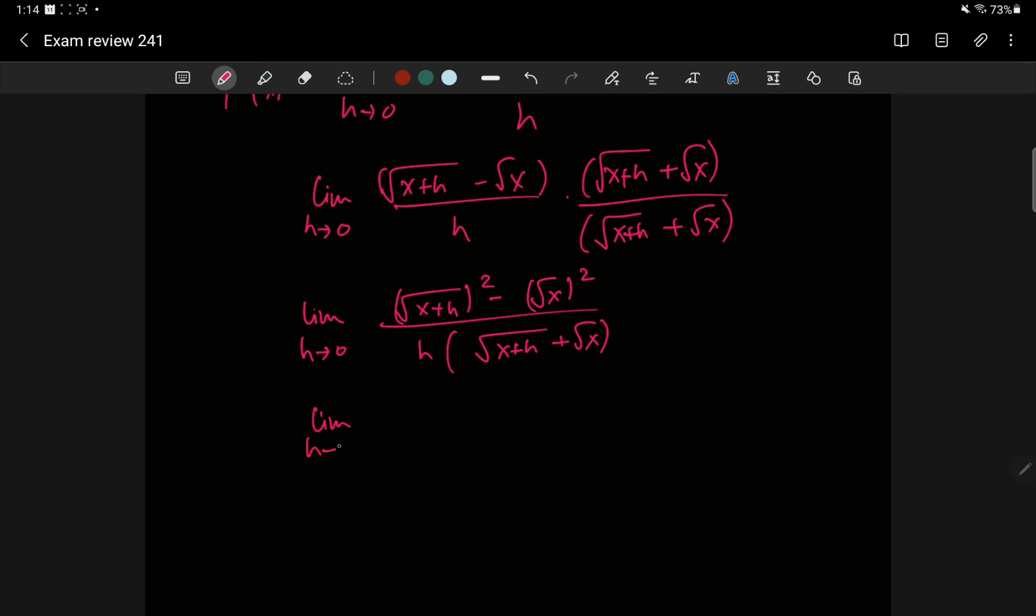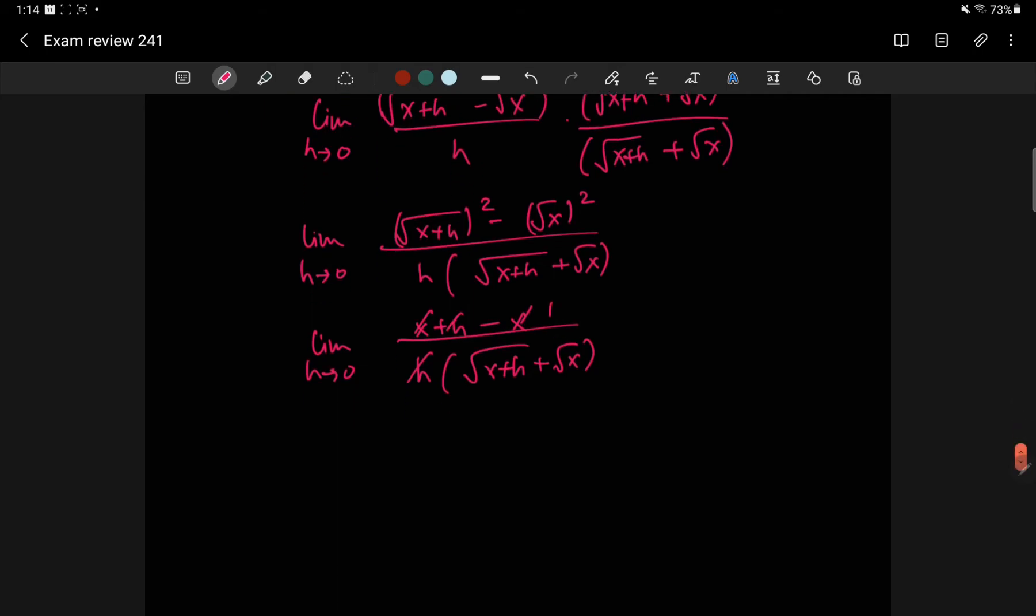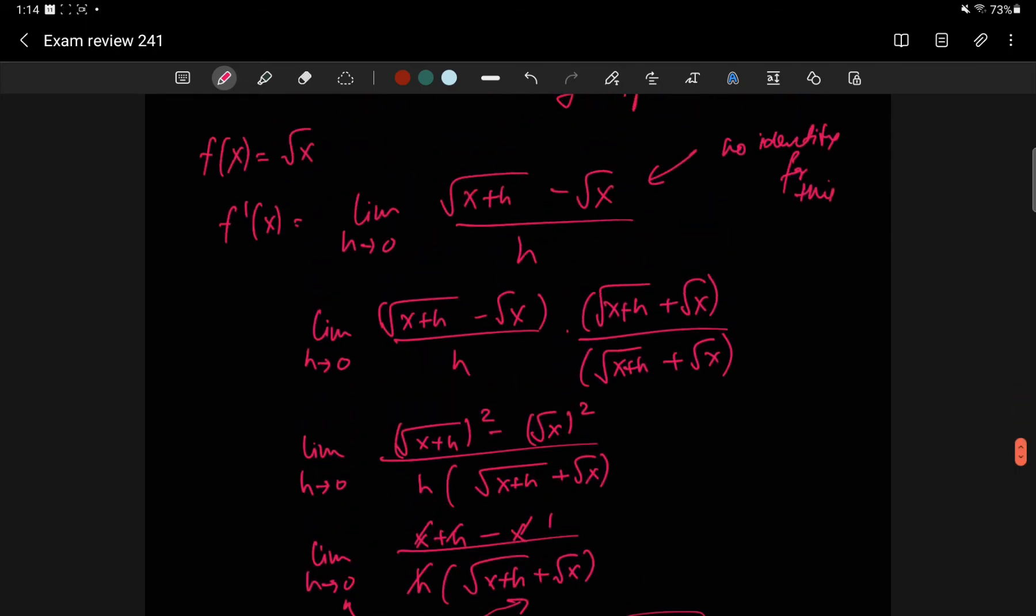And then on the top, x plus h minus x, that's what's going to save us. Because that gives me h, and the h cancels to give me 1 over h. Now it's safe to plug in. Now I can plug in h equals 0 and I get 1 over root x plus root x, which is 1 over 2 root x. So that's rationalizing kind of helps in that case.